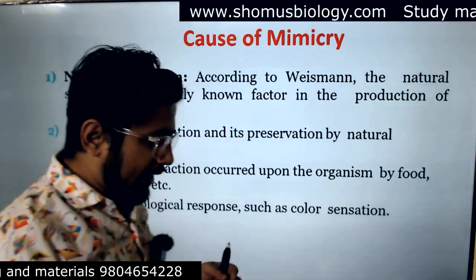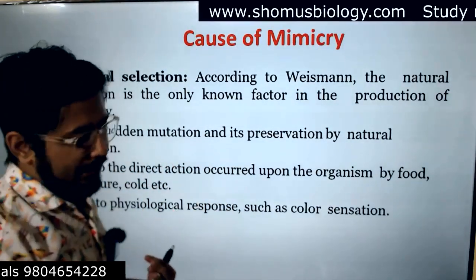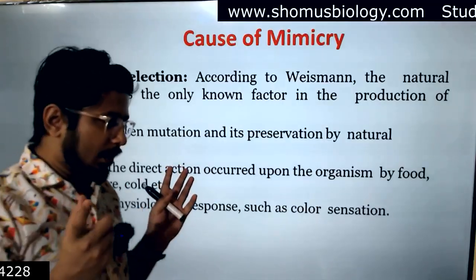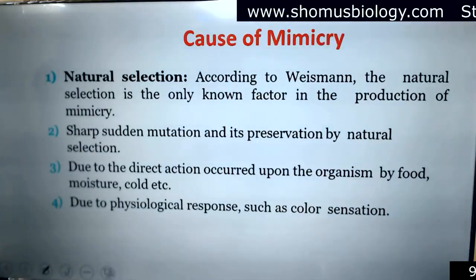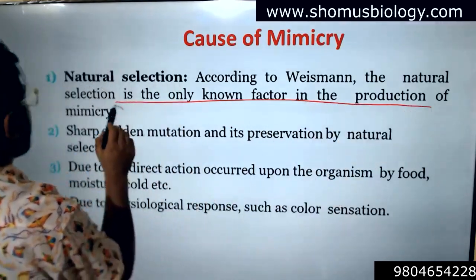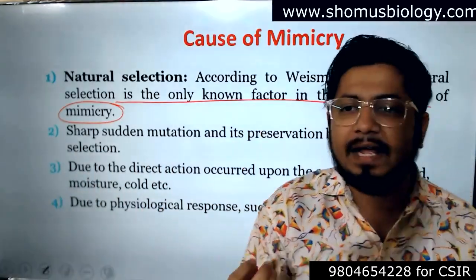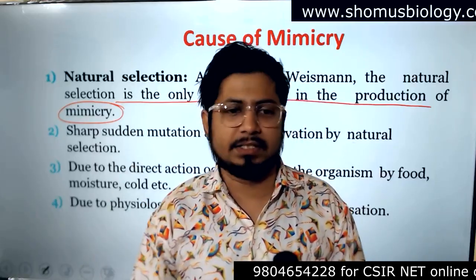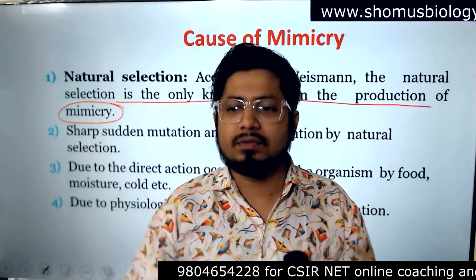What is the cause of mimicry? It is mostly protective in nature — it helps protect the mimic from being eaten by a predator, and sometimes helps the mimic catch prey and eat it. According to Weismann, natural selection is the only known factor that actually causes the production of mimicry. Short sudden mutations and their preservation by natural selection, and the direct action of food, temperature, and environment on the organism drive this. Mainly, if the organism survives due to these changes, it transfers that feature to the next generation — so the morphology acquired is transferable, and generation after generation retains that modification.